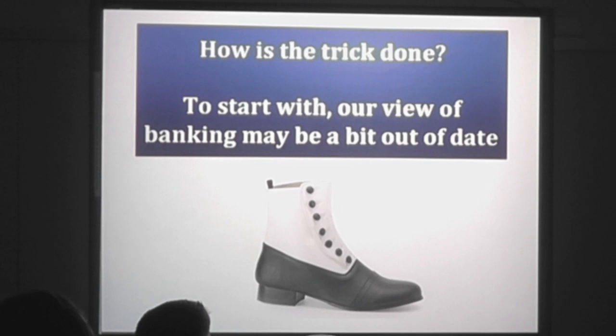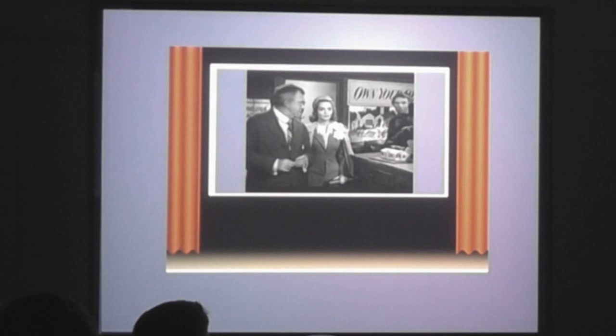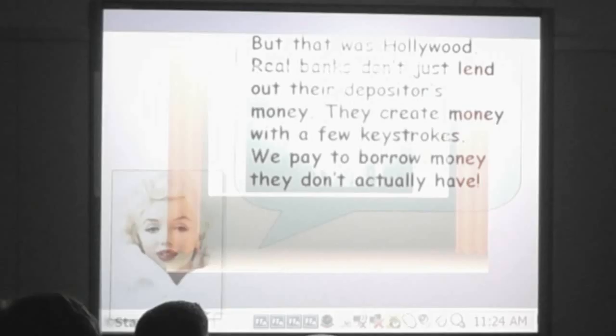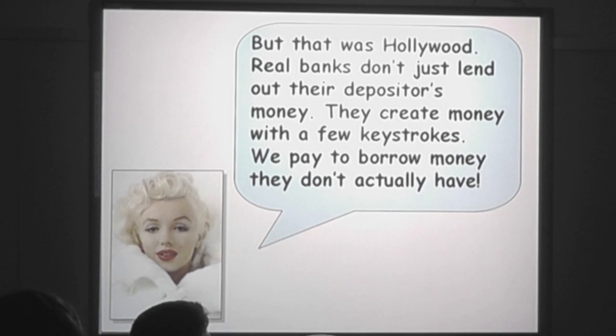How is the trick done? Our view of banking may be a bit out of date. As the movie says, the money's not in a safe — it's in Joe's house, the Kennedy house, Mrs. Maitland's house, a hundred others. You're lending them the money to build. But real banks don't just lend out their depositors' money — they create money with a few keystrokes, and we pay them to borrow money that they don't actually have.